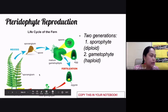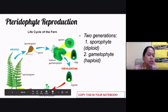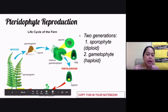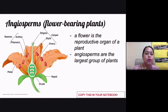The zygote grows into a mature plant and the cycle continues. To summarize alternation of generations in pteridophytes: the sporangium (diploid parent plant) produces spores; spores produce haploid gametes — sperm and egg cells; fertilization produces a zygote; the zygote grows into a mature plant, and the cycle repeats.